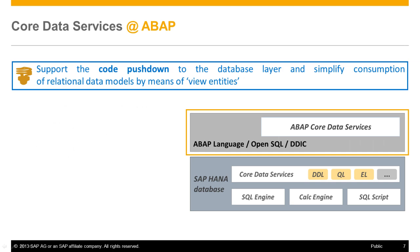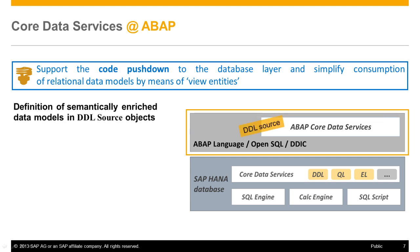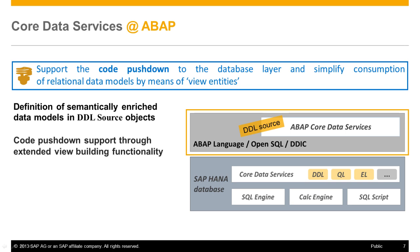The basic idea behind integrating CDS into the ABAP server is to support the code pushdown to the database layer and also to simplify the consumption of relational data models by means of few entities. Semantically rich data models can now be defined in DDL source objects which are integrated in the ABAP dictionary. The code pushdown is supported through extended view functionalities such as unions and associations, which are not provided in OpenSQL.